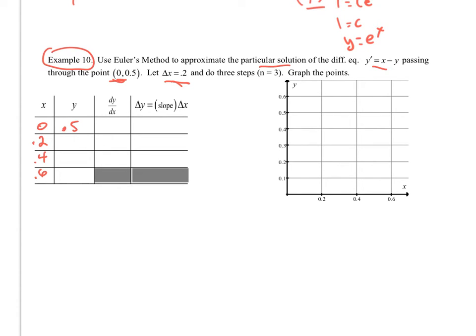So notice my x starts at 0. It won't always start at 0, but I can go like this. Because my delta x is 0.2 every time. My y is going to start off at 0.5. However, I don't know what my change is until I figure out this value right here each time.